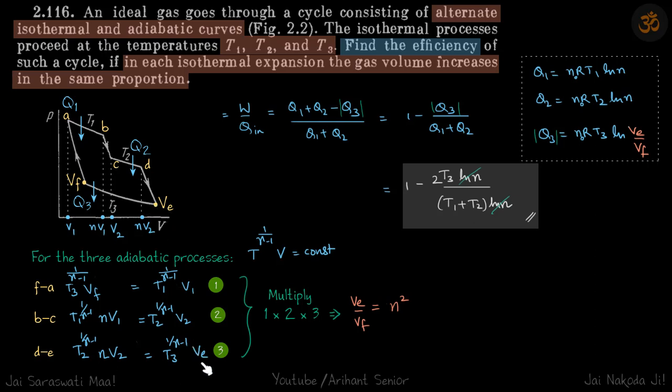We need the ratio of Ve by Vf. So you can see here if you just multiply all these three equations, the T3^(1/(γ-1)) will get cancelled, terms will cancel out, and even V1 will get cancelled by V1, V2 will get cancelled by V2, and what you get is Ve by Vf equals n².